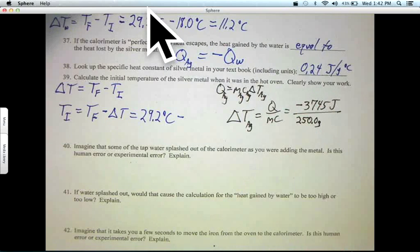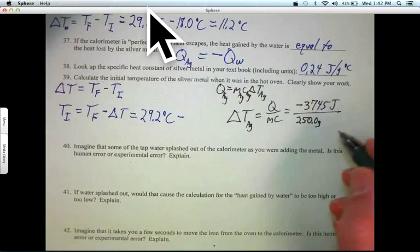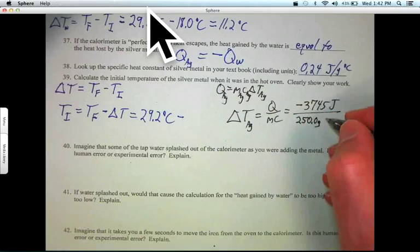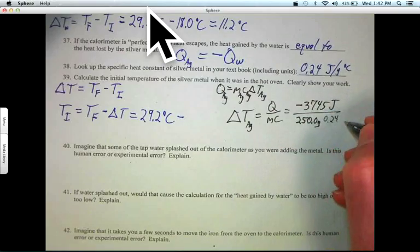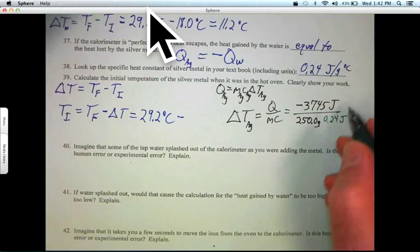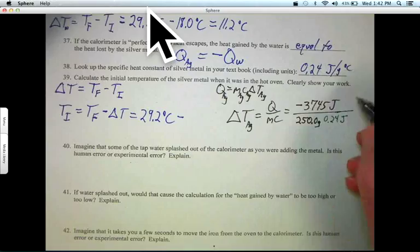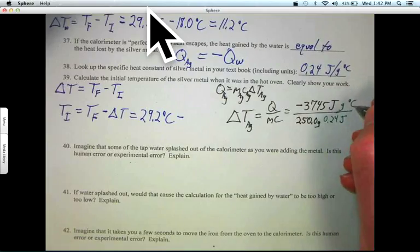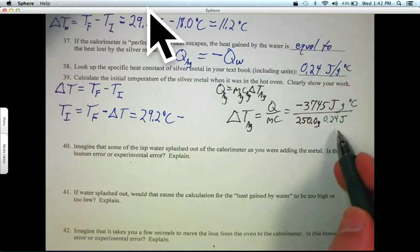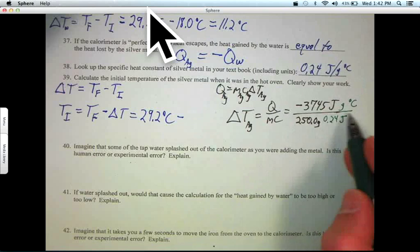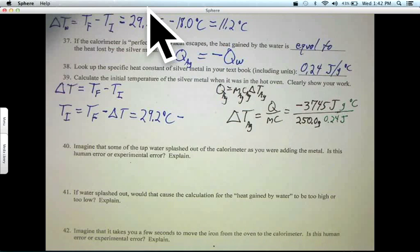And here I'm going to write it in a different color so you can see what I do with the units. 0.24 joules per, we'll just extend that divisor, per gram degrees C. So rather than creating another fraction down here, we just put it on the other side of the divisor. And let's see, we've got some canceling units.